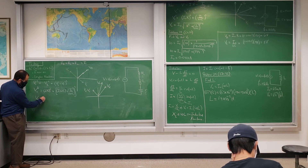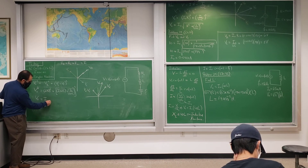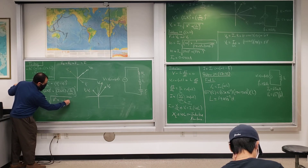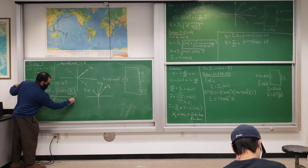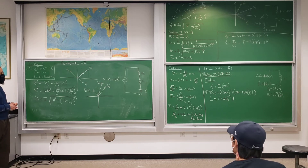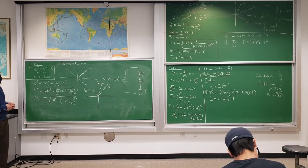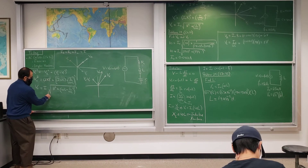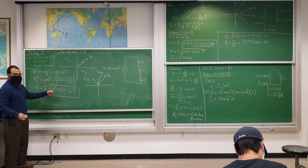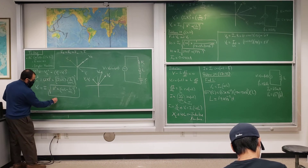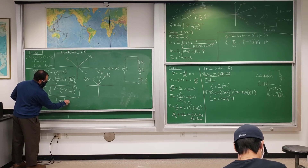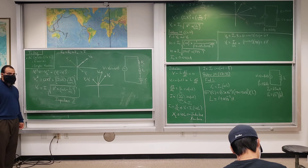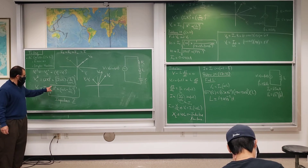So the current through the circuit is I equals V0 over the square root of R squared plus (omega L minus 1 over omega C) squared. This quantity is called the impedance, given the symbol Z, and its units are ohms.